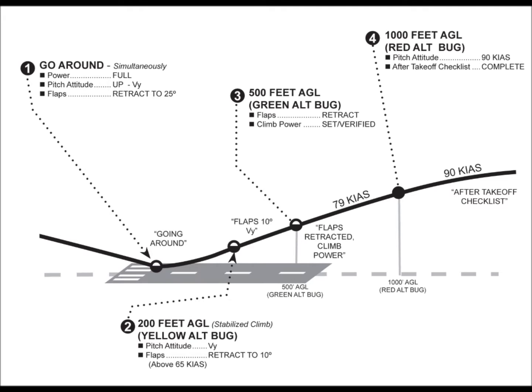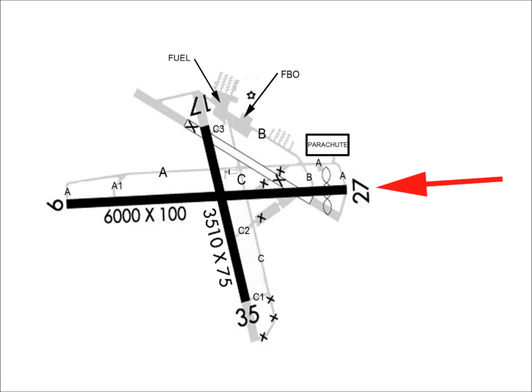At this point, a normal climb profile can be resumed with final flap retraction made at 500 feet AGL. Let's head out to the airplane to see an example of a go-around. Our rejected landing takes place on approach to runway 27 at Palatka Municipal Airport. The maneuver is initiated at about 100 feet above the ground, due to a simulated scenario in which an aircraft is taxied onto the landing runway.